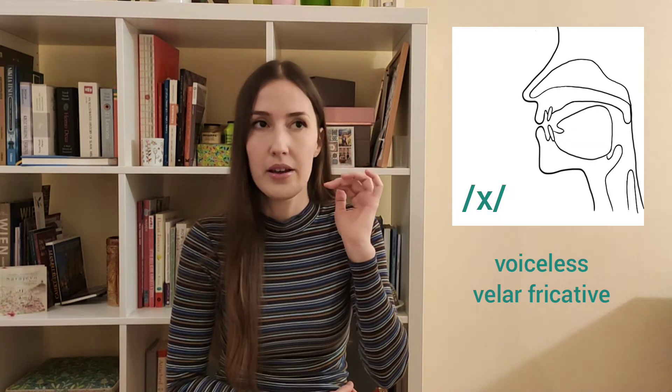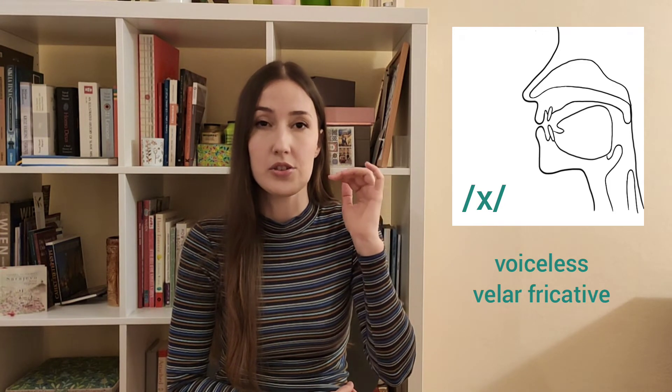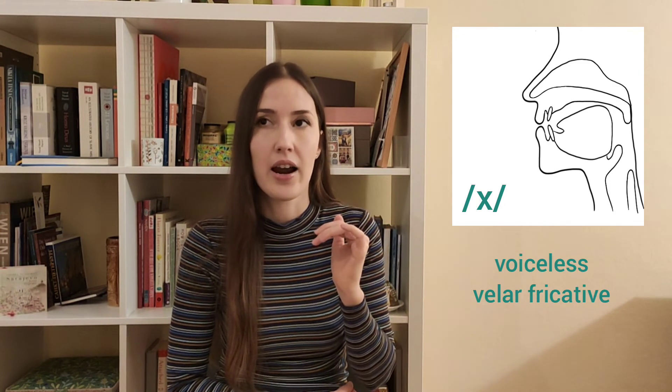Then there is the CH sound that is a voiceless velar fricative. We find it in words like MACHEN, DOCH, NACH, and so on. This one is produced when the tongue goes back and up, almost to the soft palate — so it's CH, CH. This sound also exists in Czech, appearing in words like CHLÉB, CHLAPEC, CHTÍT, and so on.